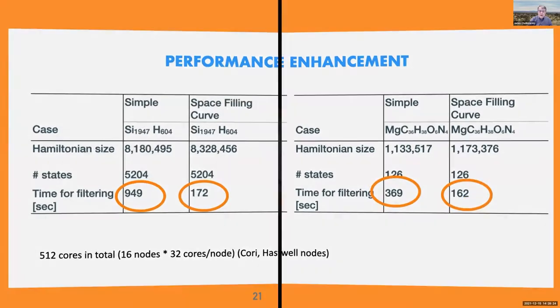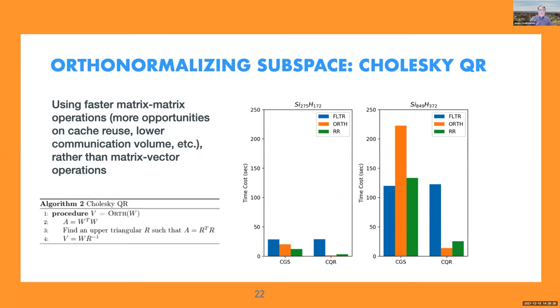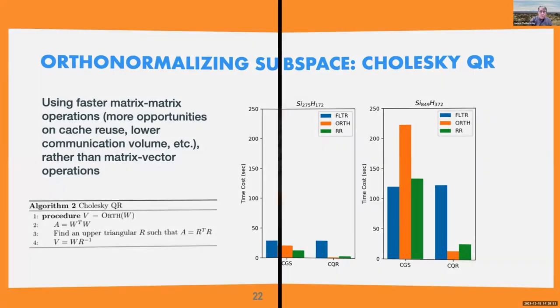I'll skip this section to say that the normal Gram-Schmidt orthogonalization can be a real problem. Here's for almost a 900 atom silicon. It's dominating, but if you use Cholesky QR algorithms, you can take it from 220 seconds to about 10 seconds. So like I said, if you can reduce the prefactor, it's helpful.